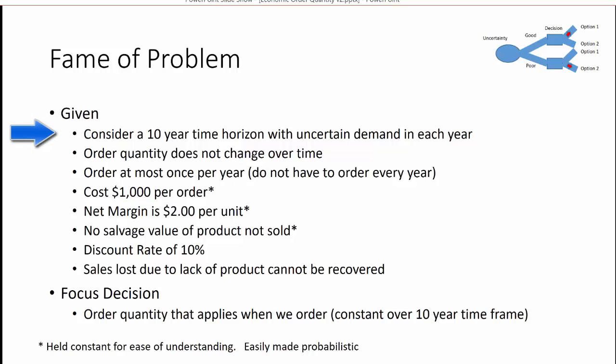Assume we have 10 years with uncertain demand in each year. But we have to establish an order quantity that does not change over time. We can order at most once per year, but we don't have to order every year. The cost per order is $1,000. We're buying and selling product that has a net margin of $2 per unit. And let's initially assume there's no salvage value of the product that's not sold at the end of the 10 years. We'll assume a discount rate of 10% in discounting back our cash flow. We're also not going to assume any taxes here. And the sales loss due to lack of product cannot be recovered.